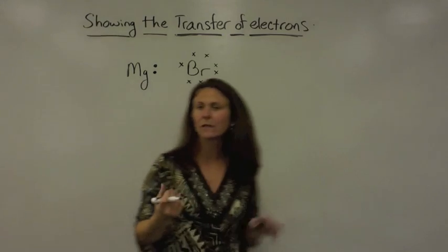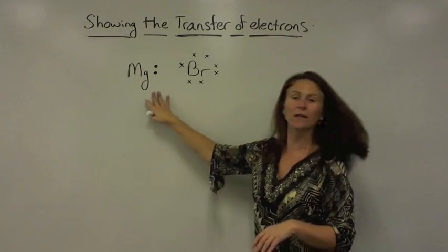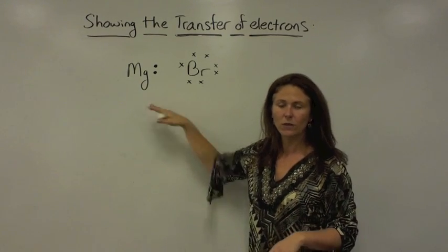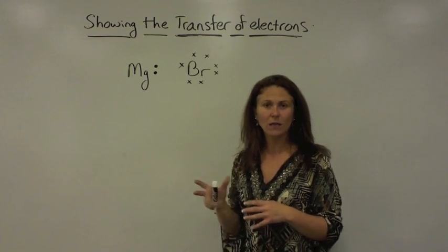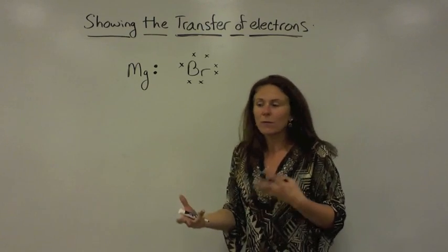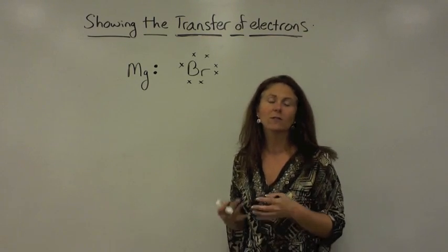If you notice, bromine only needs to gain one electron, but magnesium needs to get rid of two. So, the transfer of electrons is going to occur simultaneously between all the atoms of magnesium and bromine in that sample until everybody's happy.